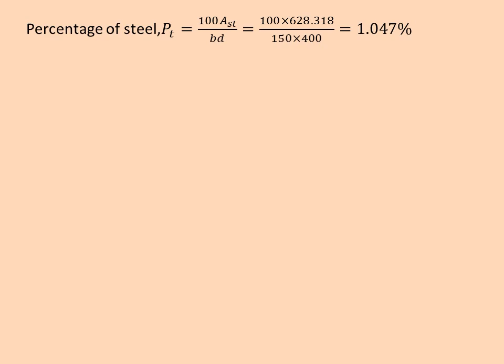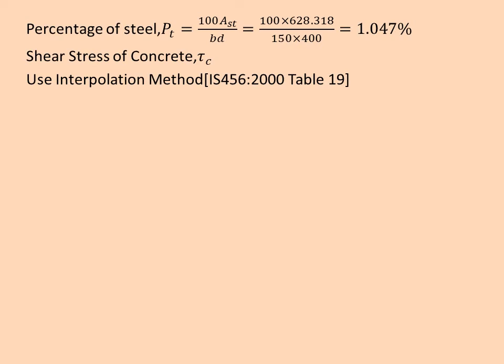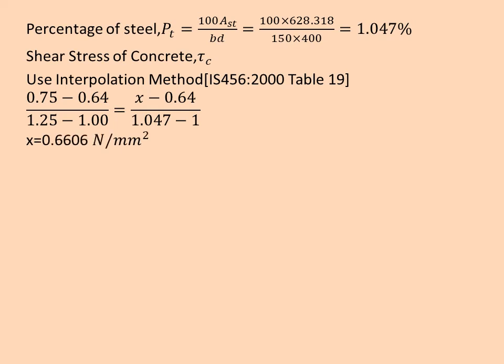Now we find the percentage value of steel, which is 100 × Ast / b·d. We substitute the values and we have 1.047%. After that we find the shear stress of concrete from the code, which is between PT values in the code table. The PT value that we have found is in between two values. So we have to use interpolation method here. After using it, we get x equal to 0.6606 N/mm², that is the τc value.